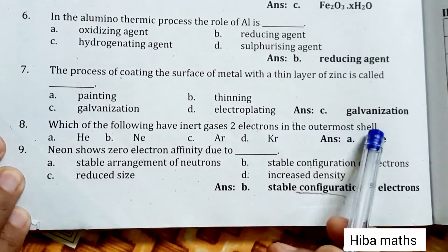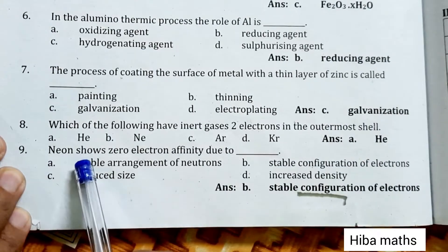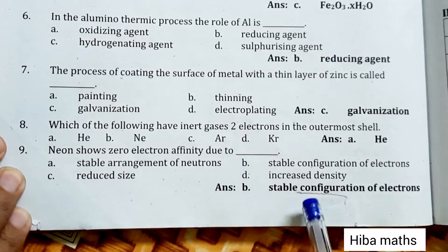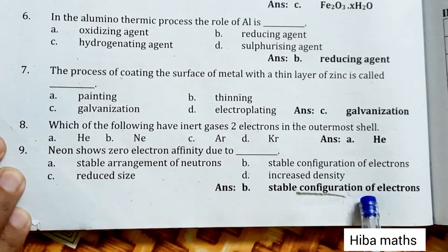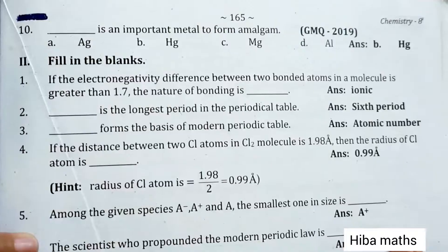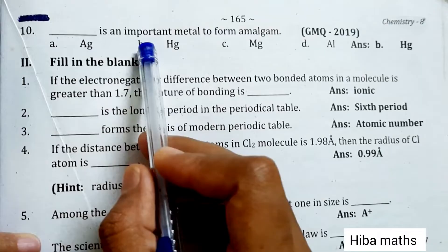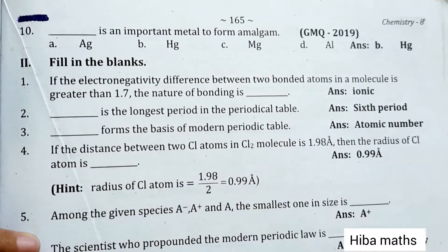Neon shows zero electron affinity due to stable configuration of electrons. Question 10: This is an important metal to form amalgam - mercury.